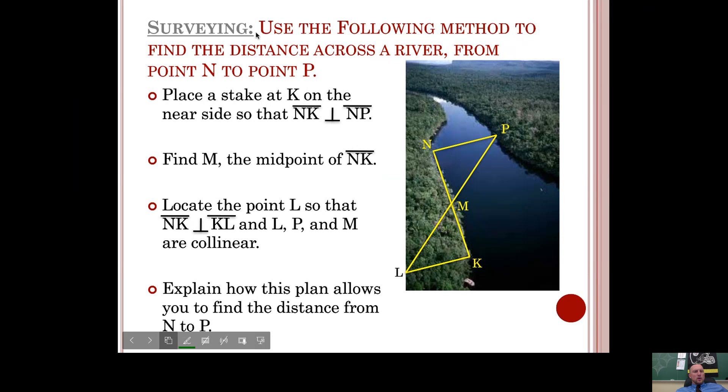Here's an example of what a surveyor would do. We're going to use the following method to find the distance across a river from point N to point P. You don't want to directly measure the distance across a river. If you had something to measure it with, that would involve you maybe jumping in the river and swimming across or riding a boat across. You can set up an example like this where you can measure indirectly.